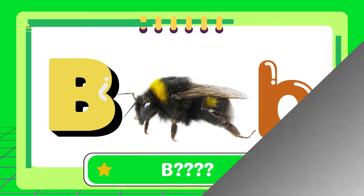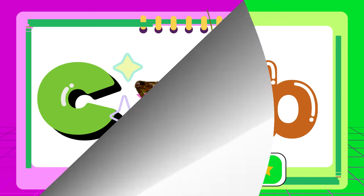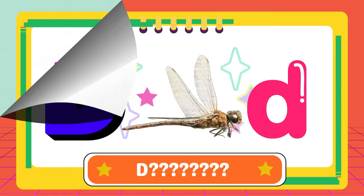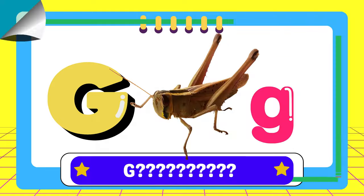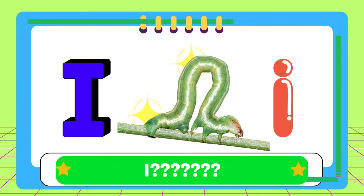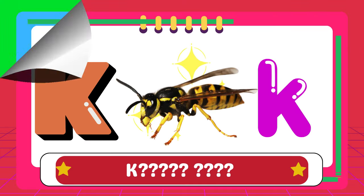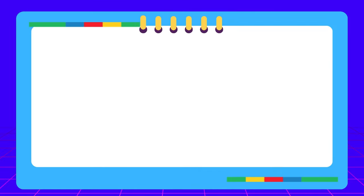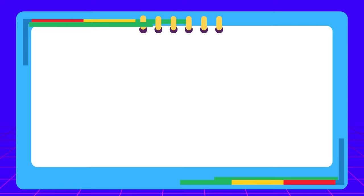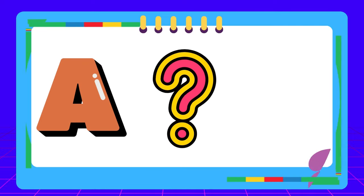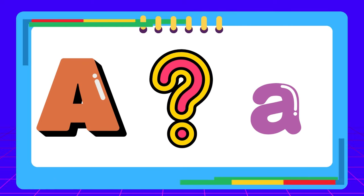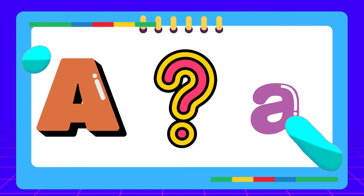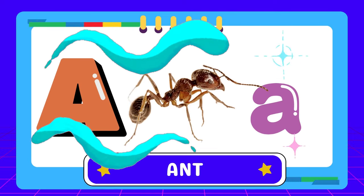Let's learn alphabets from A to Z with insects' names. How many insects do you know? A — A for ant.